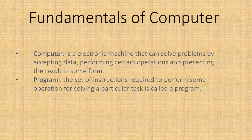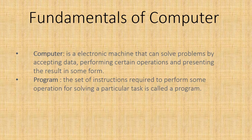Session one will start from the definition of computer and program. A computer is an electronic machine that can solve problems by accepting data, performing certain operations, and presenting the result in some form. The set of instructions required to perform some operation for solving a particular task is called a program. Nowadays computers are widely used in every field like science, engineering, robotics, etc.